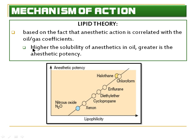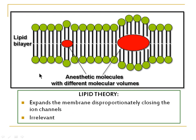This means that the higher the solubility of the anaesthetic in oil, the greater its anaesthetic potency. This graph shows lipophilicity against anaesthetic potency — the greater the lipophilicity of the agent, the greater the anaesthetic potency. For example, chloroform, having the highest oil-gas coefficient, has the greatest anaesthetic property. So this theory claims that higher lipophilicity equals higher anaesthetic potency.